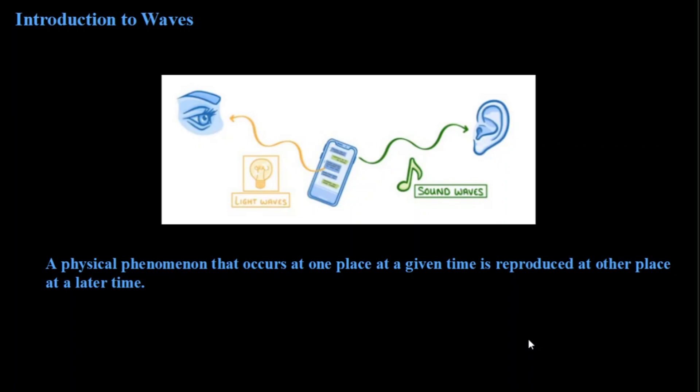The definition of a wave can be put something like this. A wave is a physical phenomenon that occurs at one place at a given time and is reproduced at some other place at a later time. If there is a physical phenomenon something like this, then that physical phenomenon can be called as a wave. This is the basic definition.